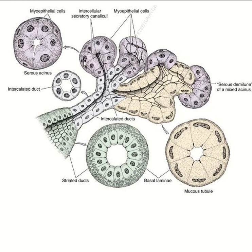So this is an exocrine gland — the salivary gland is an exocrine gland. An exocrine gland has two parts: the glandular part and the duct.